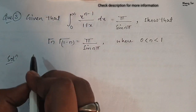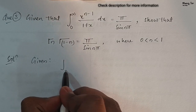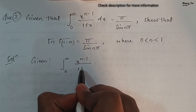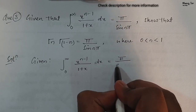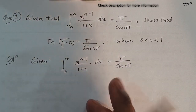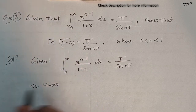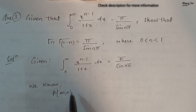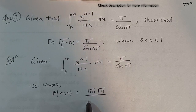First of all we will write the given part. What is given? The integration limit goes from 0 to infinity of x to the power n minus 1 upon 1 plus x dx equals pi upon sin(nπ). Since we know that beta of m comma n equals gamma(m) gamma(n) upon gamma(m plus n).